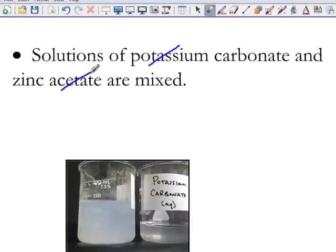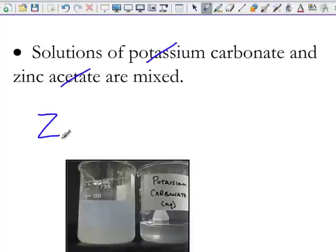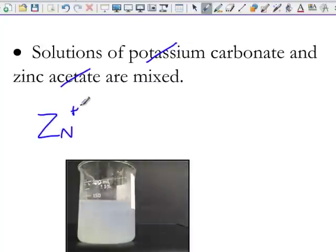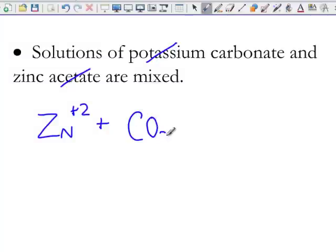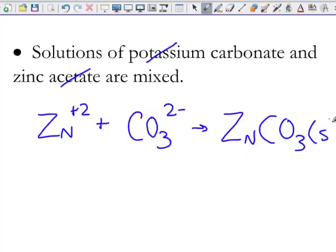So we're going to put our positive cation, which will be zinc, and zinc has a plus 2 charge, always has a plus 2 charge. Carbonate is CO3, and carbonate has a negative 2 charge. Since the cation has a positive 2 charge, and the negative anion has a negative 2 charge, it's going to come together to form zinc carbonate, ZnCO3, and that will be our solid.